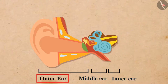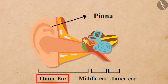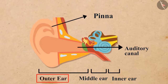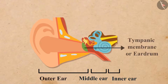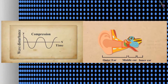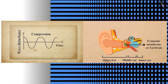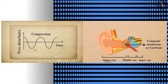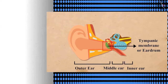The pinna of the outer ear collects the sound from the surroundings and then it passes through the auditory canal. Then the sound reaches the eardrum or the tympanic membrane. Whenever a compression of the medium reaches the eardrum, it increases the pressure outside the membrane and forces the membrane inward.